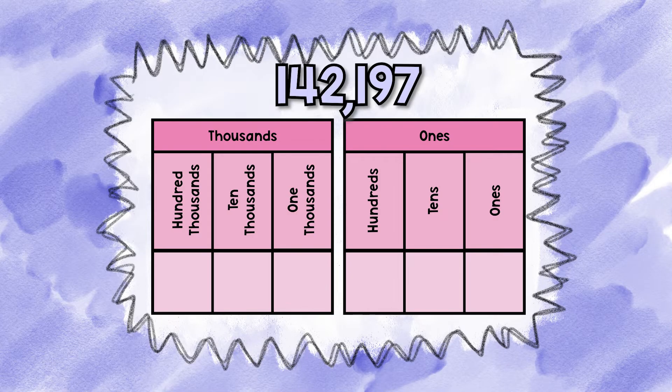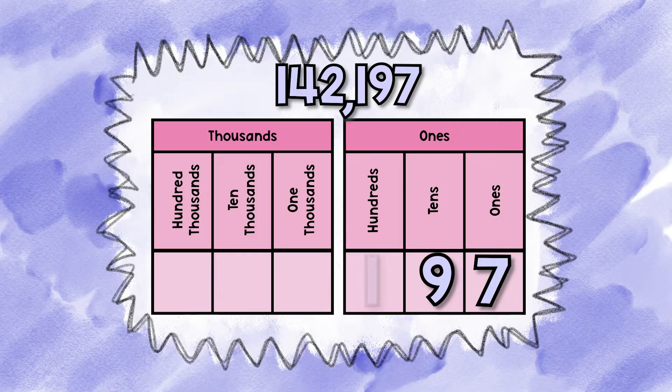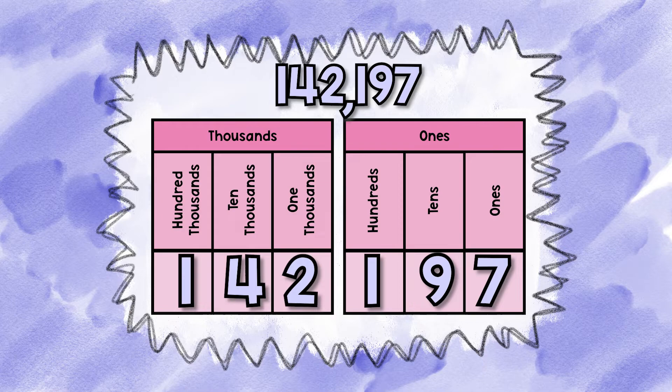Let's try another one. 142,197. There's seven in the ones place, nine in the tens place, one in the hundreds place, two in the one thousands place, four in the ten thousands place, and one in the hundred thousands place.